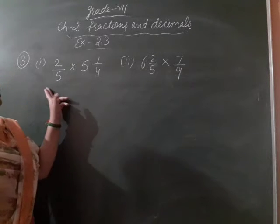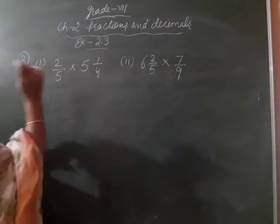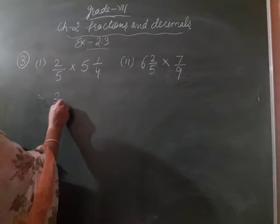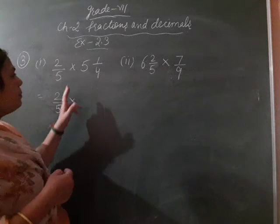Our third question, we multiply the fractions 2 by 5 into 5, 1 by 4. So, if we have to multiply the fraction, there is a mixed fraction. Our first step is convert into improper fraction.